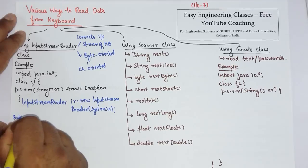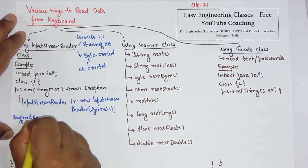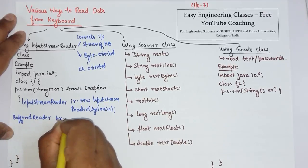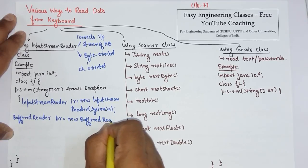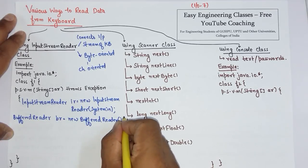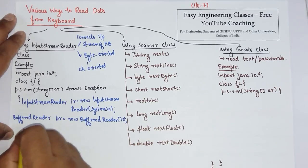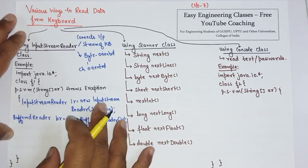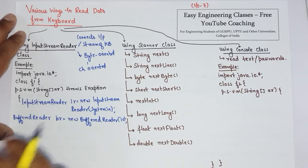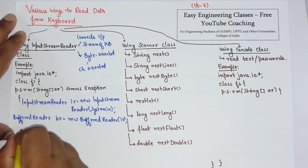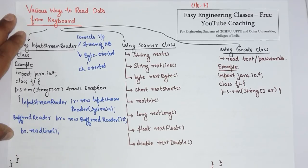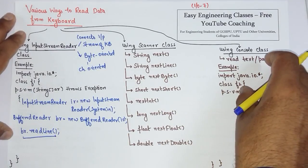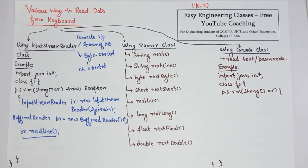Next, create an object of BufferedReader class: br = new BufferedReader(IR), attaching the InputStreamReader object IR. Now, if you want to read anything input from the keyboard, you can use the readLine() method: br.readLine(). This method is used to read the contents line by line.